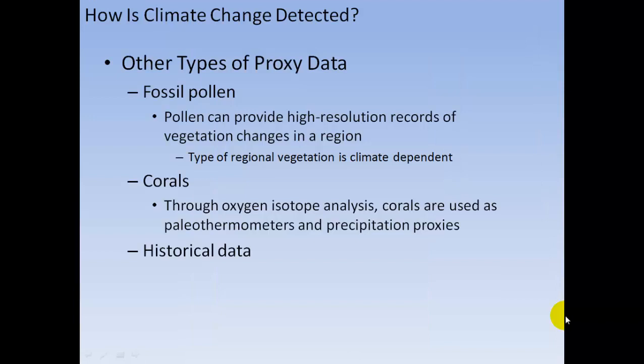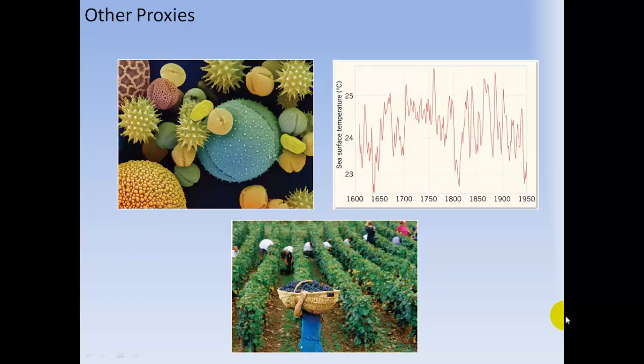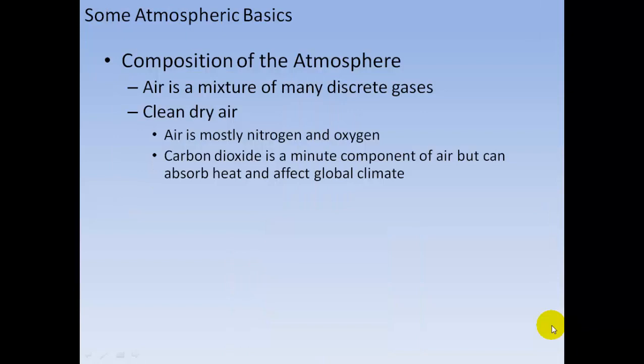Other types of proxy data include fossil pollen, which provides high-resolution records of vegetation changes in a region, and the type of regional vegetation is climate-dependent. Corals, through oxygen isotope analysis, are used as paleo-thermometers and precipitation proxies. Additional proxies include historical data, sea surface temperatures from microbes, and what vegetation grew where, as well as composition of the atmosphere.